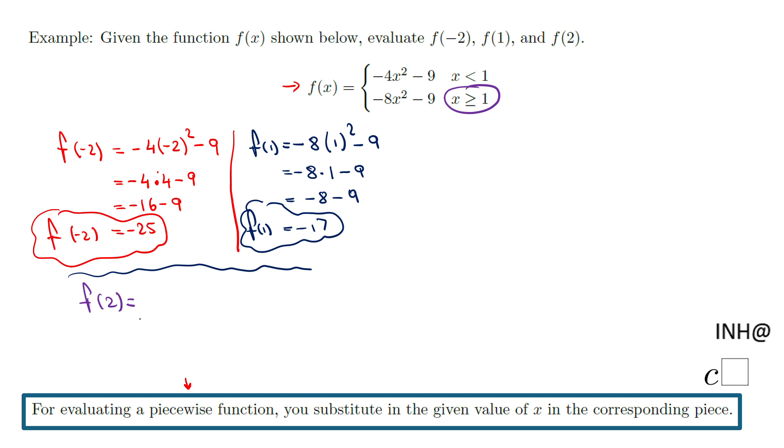So I'm going to use that piece. I'm going to have negative 8 times 2 to the second power minus 9. That will be negative 8 times 4 minus 9, and that will be negative 32 minus 9, and that will be negative 41.